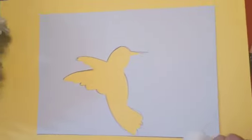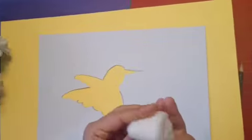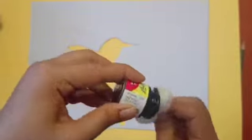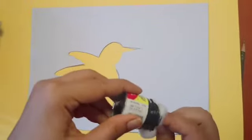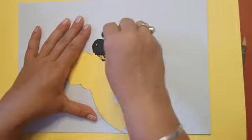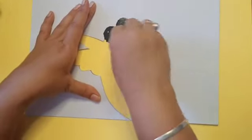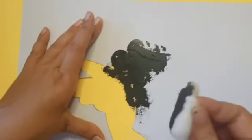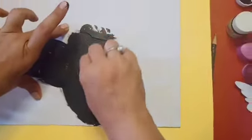Take black color and cotton. Like this. Make this active like this. Like this, you have to color.